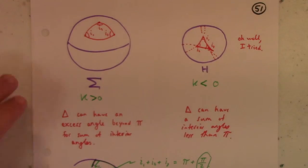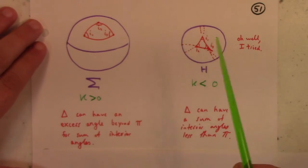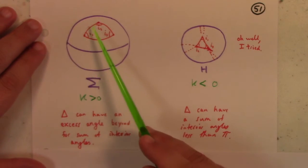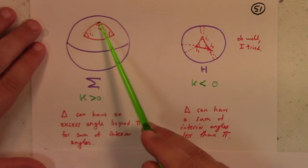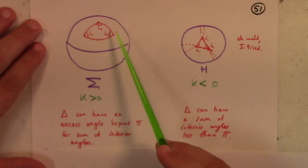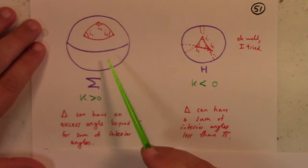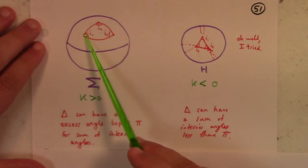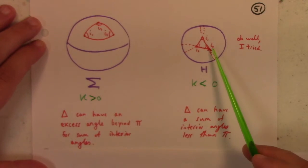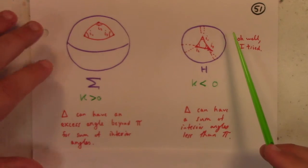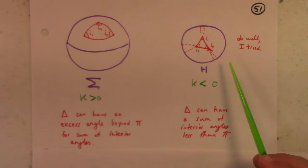A couple of important examples: on a sphere, you can look at one of these triangles that has a 90-degree angle at each corner. For a surface with positive Gaussian curvature, the triangle can have an excess angle beyond π for the sum of the interior angles. This has three π over two, or the sum of the angles is 270 degrees.